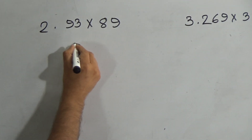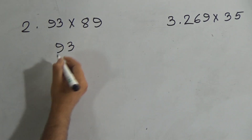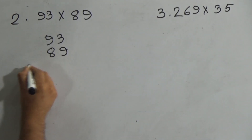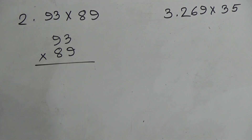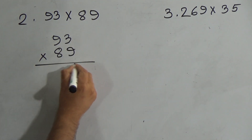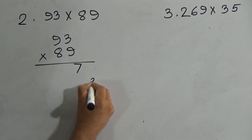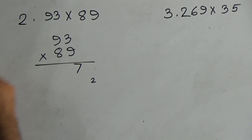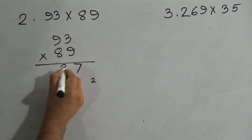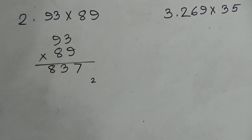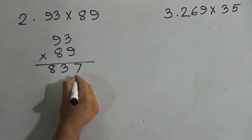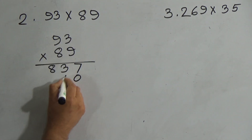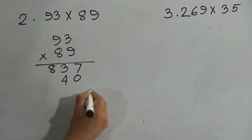Let's go to the next question: 93 multiplied by 89. First of all, you have to arrange this way — 93 and 89. Nine threes are 27, there is a carry of two. Nine nines are 81, and 81 plus two is 83. Now here it will be zero. Eight threes are 24, there is a carry of two again.